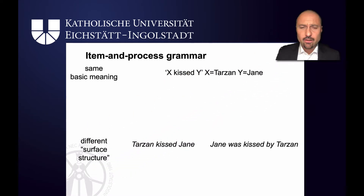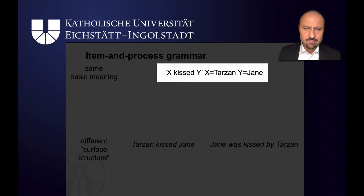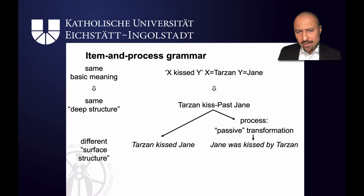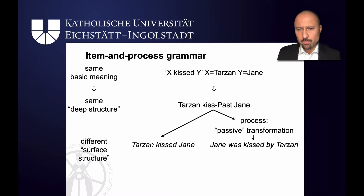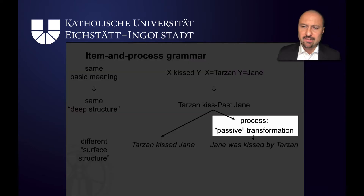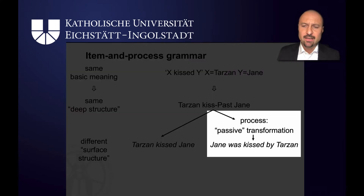Simplifying somewhat, and looking at a very early stage of transformational grammar, it's an item and process grammar. You've got items — Tarzan, Jane and Kiss — and these would be filled into a deep structure like 'Tarzan Kiss in the past and Jane.' Then depending on whether it's an active or passive sentence, transformations would apply. In the active sentence you get the surface structure 'Tarzan Kiss Jane,' and in the passive, the transformation would turn Jane into the subject, change the verb phrase into 'was kissed,' and put the agent into the optional by-phrase.